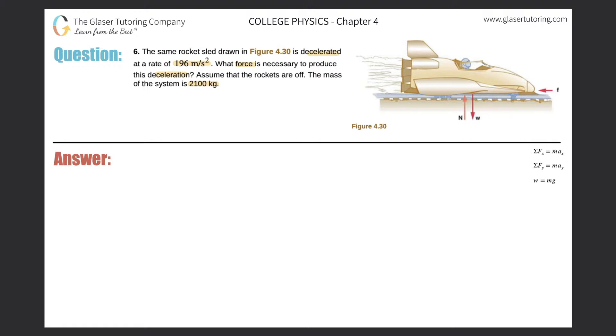All right, so let's just write down what we're given. It says that there's a deceleration the object is experiencing. Now if it's a deceleration, why don't we make that acceleration value negative? We'll assume it's moving to the right, okay?